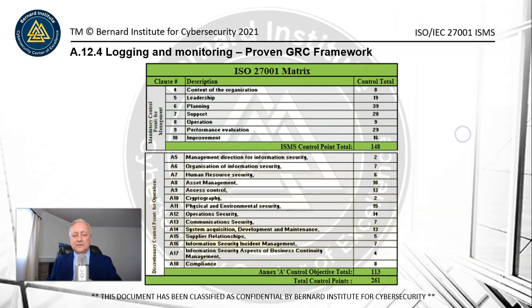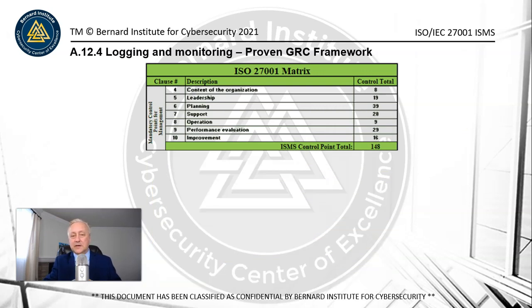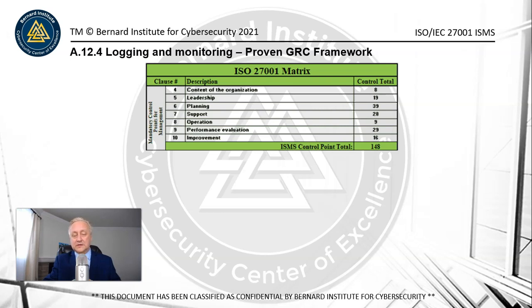In the ISO framework, we have two parts. There's the management system — clauses four to ten — which is not all that well known. I have several videos talking about different parts of this management system. There are 148 control points, which I've boiled down to seven processes, allocating these controls to those processes to streamline how the management system gets implemented and managed on a day-to-day basis.